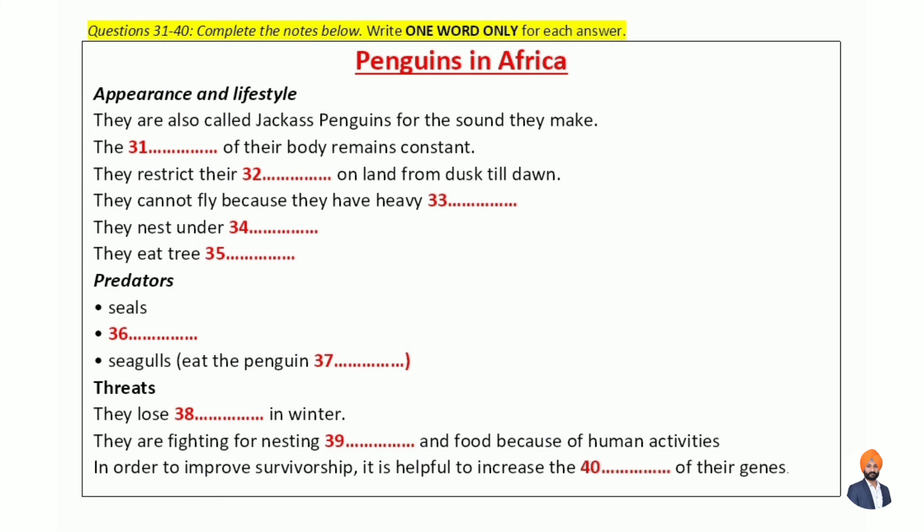Even though they are categorised as birds, African penguins aren't able to fly because of their heavy bones. Their wings are more like flippers that make them particularly suited for life in the water. When they're on land, their flippers and their tails help them keep their balance and walk upright.